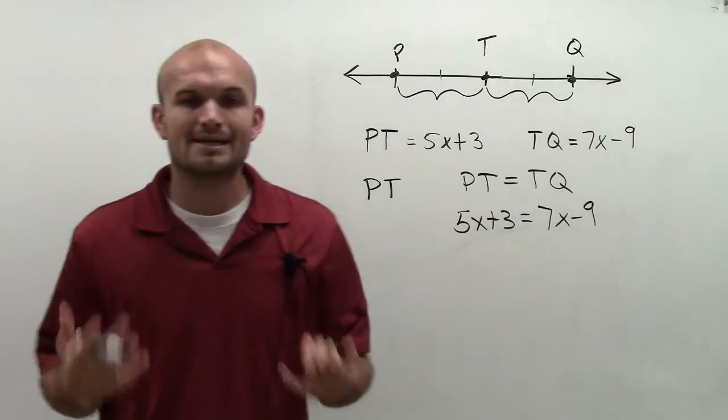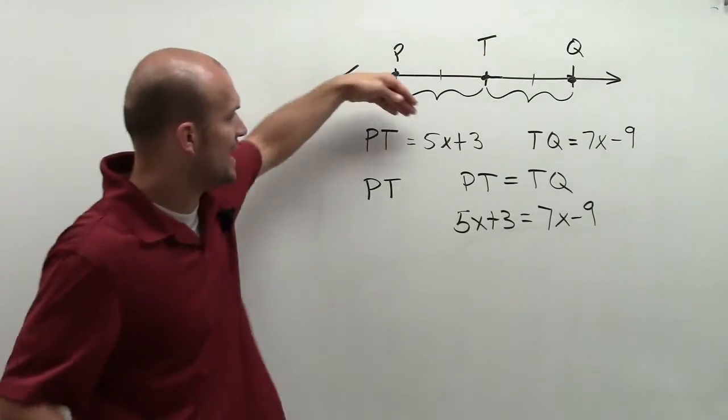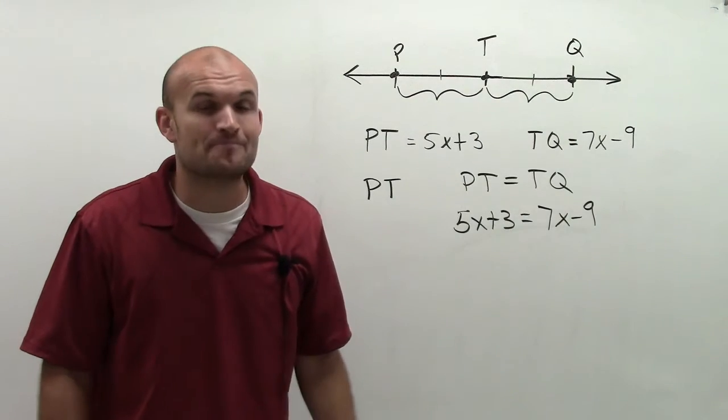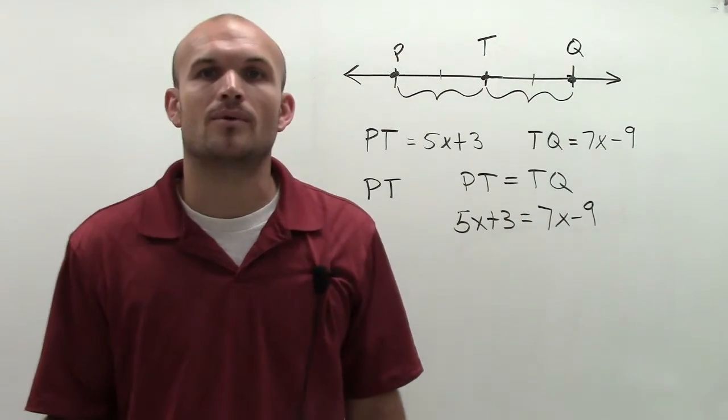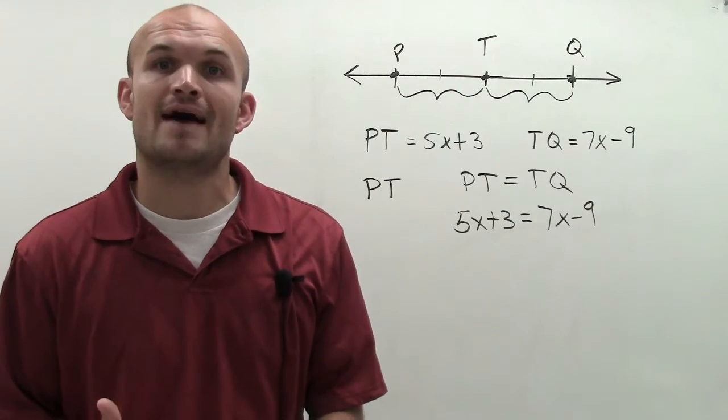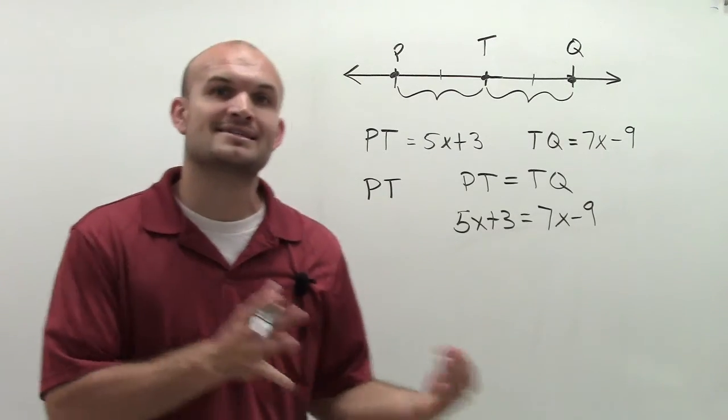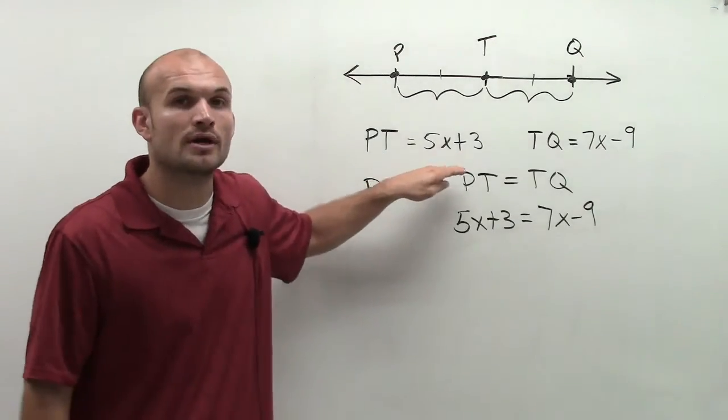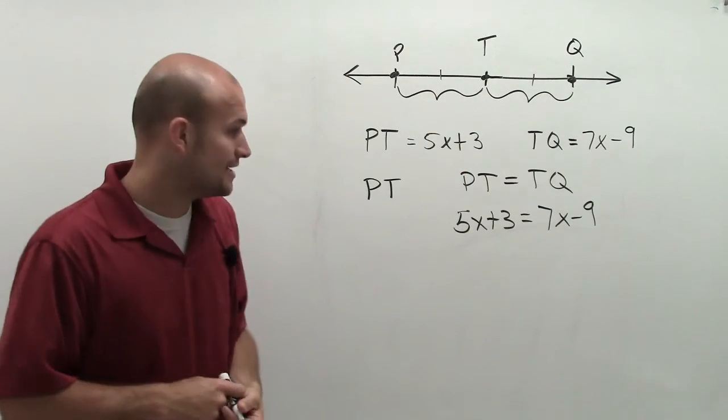So what I need to do, if I want to find the value of PT—see the value of PT is 5x plus 3. What is it we don't know? We don't know the value of x, right? If I can find the value of x, I can plug in that value of x into my expression for PT, and I can actually get a numeric value.